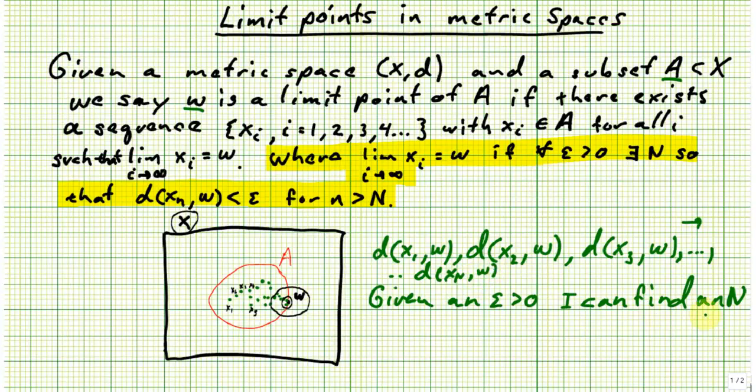w. I can find a point in this sequence so that the distance from x small n to w is always less than epsilon as long as we're further along in the sequence than n. In other words, as long as n is bigger than capital N.